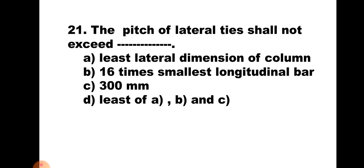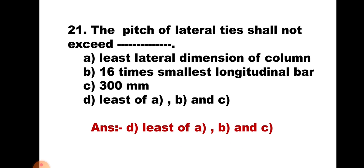Question number 21. The pitch of lateral ties shall not exceed: A) least lateral dimension of the column, B) 16 times the smallest longitudinal bar, C) 300 mm, or D) least of A, B, and C. The pitch — distance between two consecutive lateral ties — is calculated from three criteria: least lateral dimension of the column, 16 times the smallest longitudinal bar, and 300 mm. Whichever is the least is taken as the pitch. Hence the correct answer is D, least of A, B, and C.